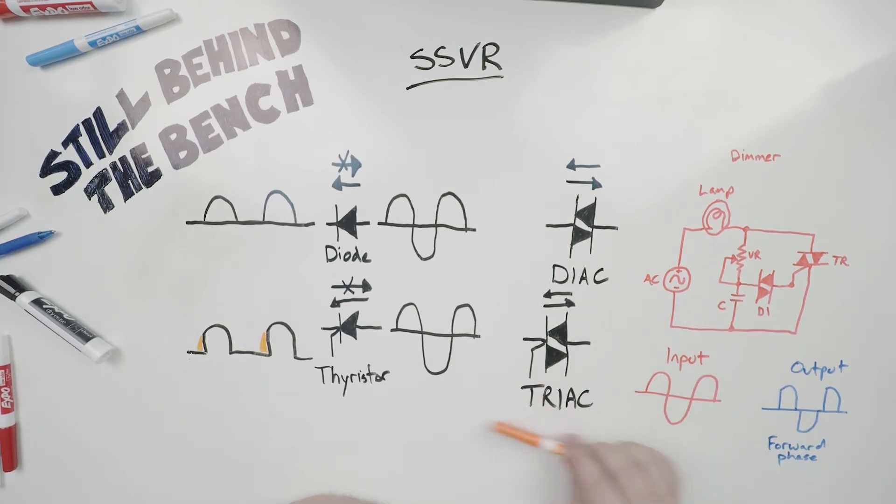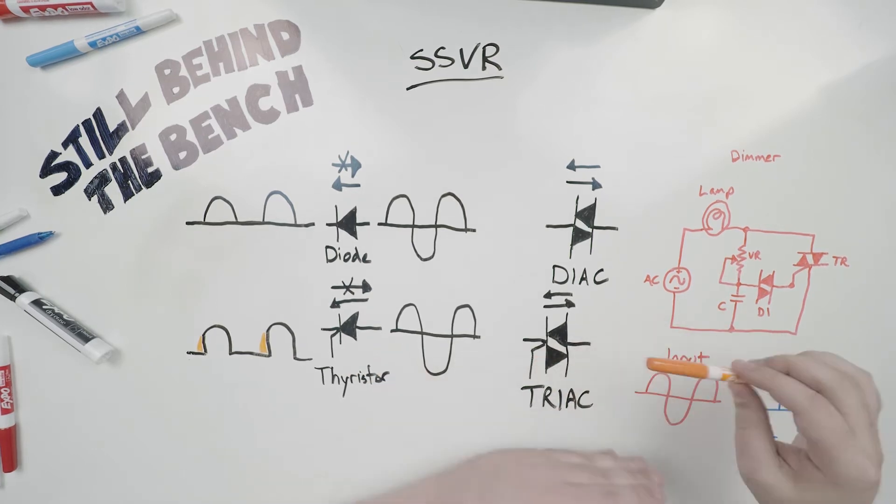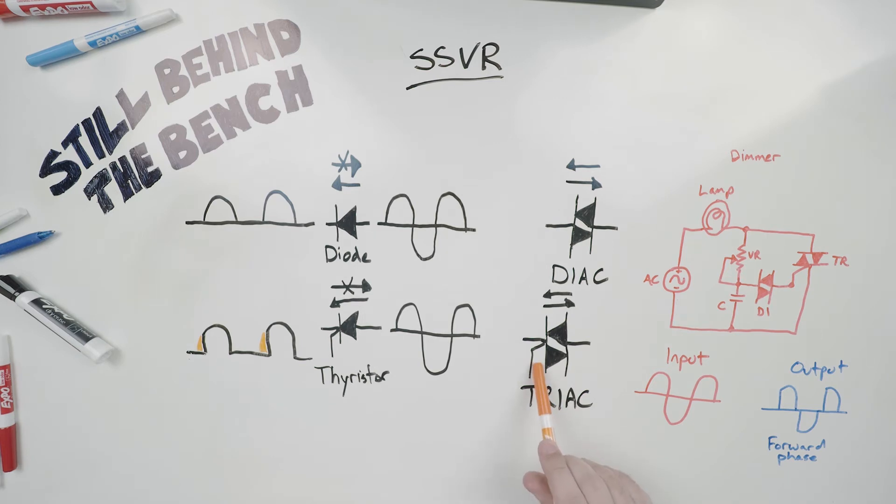And then we have a TRIAC which is like the thyristor, but it can conduct both ways. And it is still only triggered by an applied voltage to its gate.